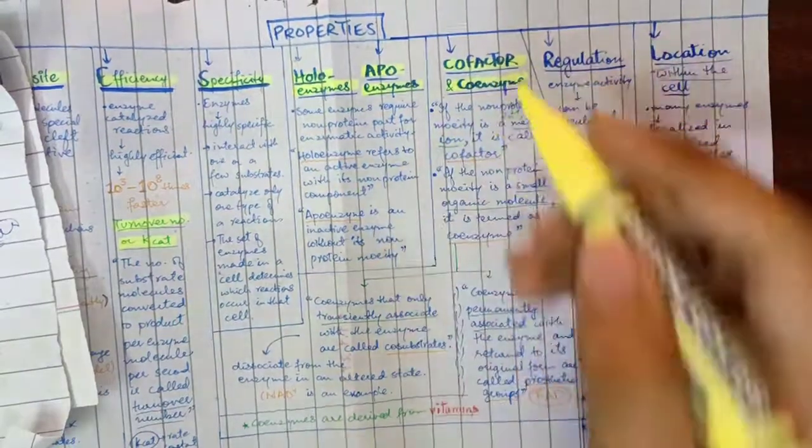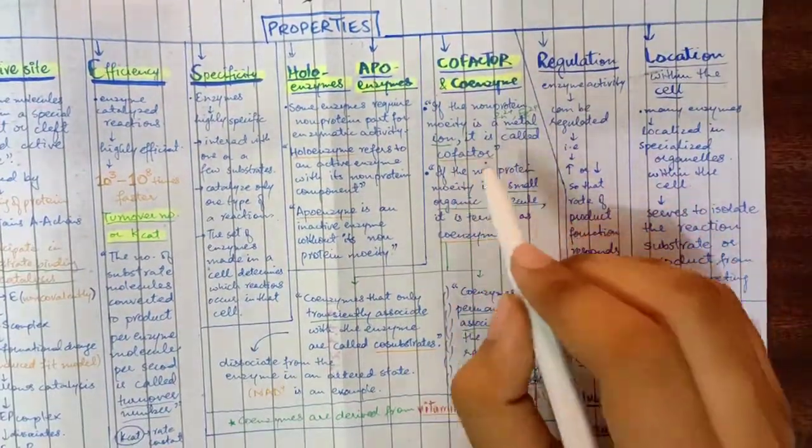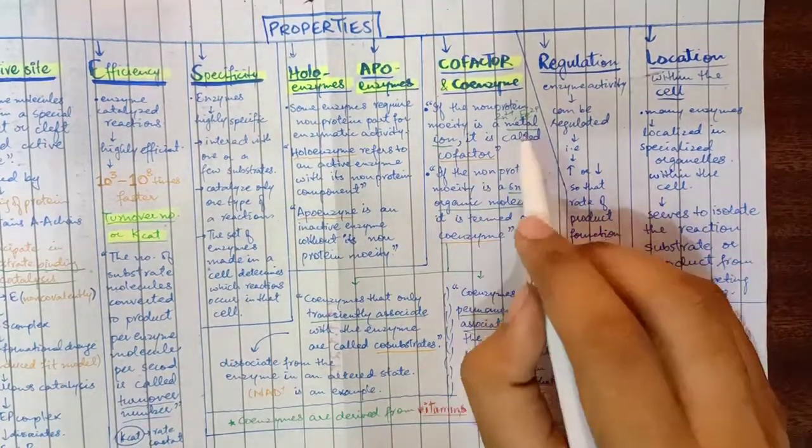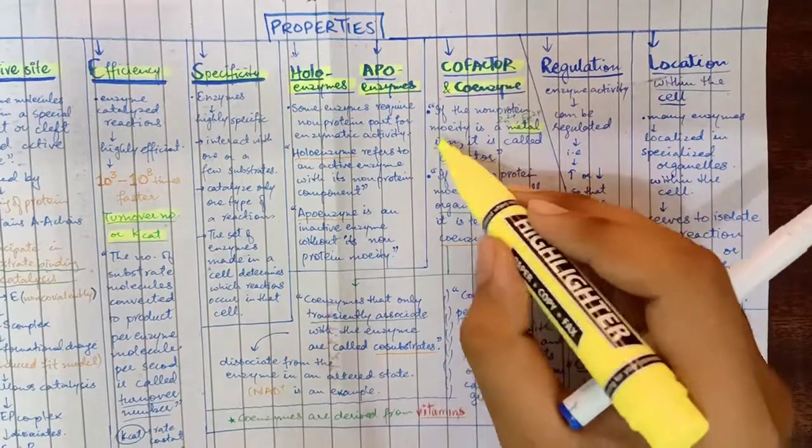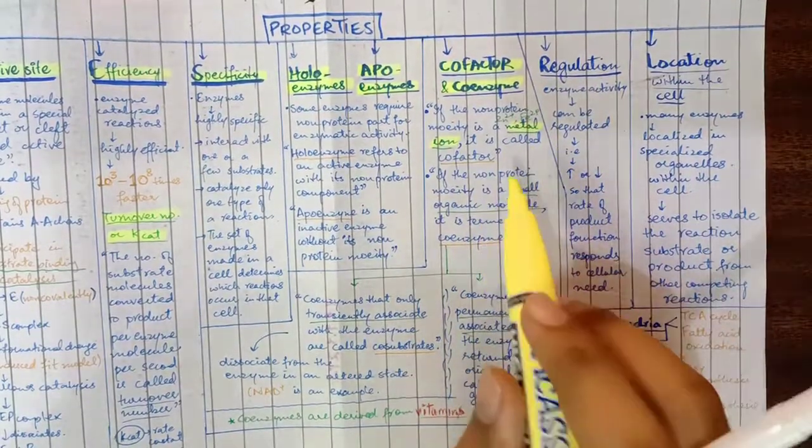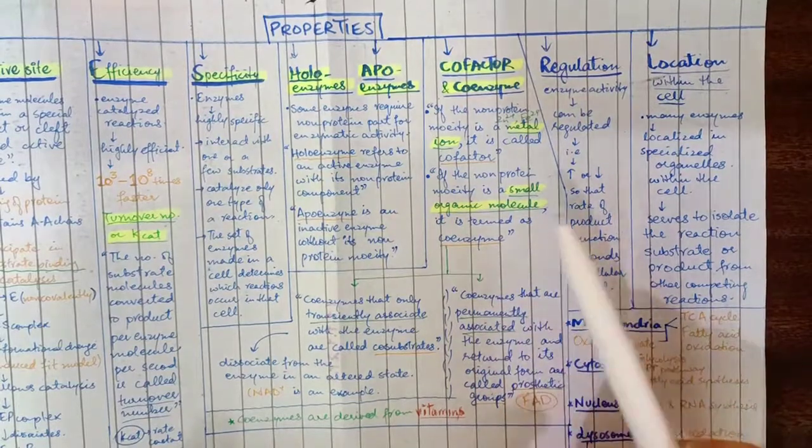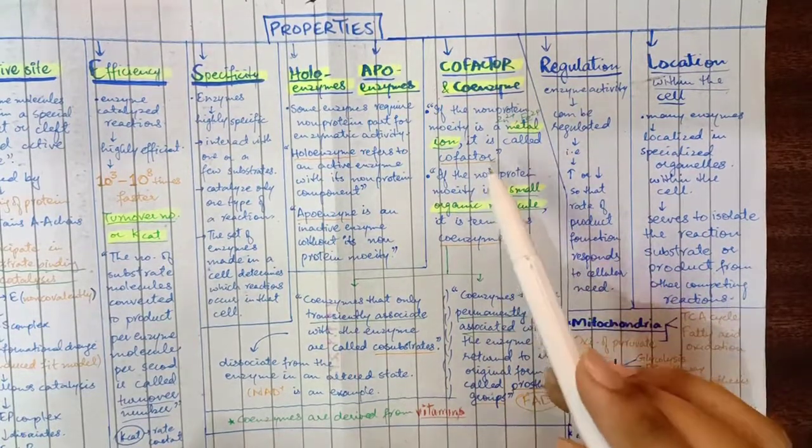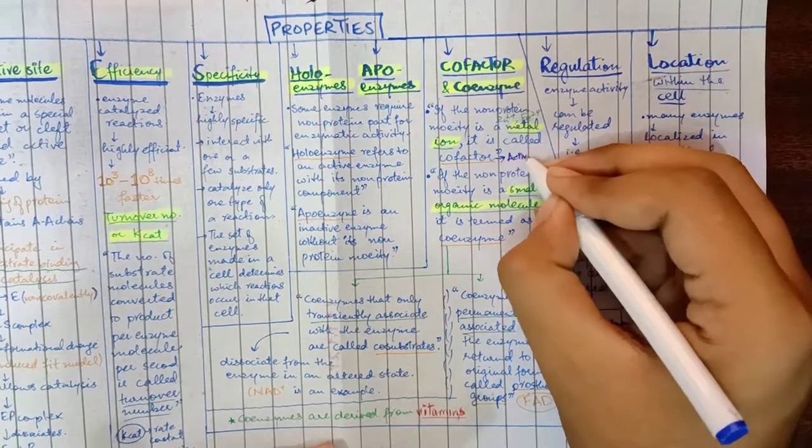Regarding cofactors: if the non-protein moiety is a metal ion, we call it a cofactor. If the non-protein element is a small organic molecule, we call it a coenzyme. Metal ions are cofactors and can also be called activators.